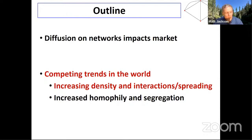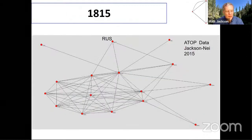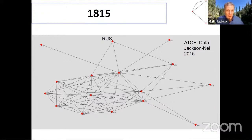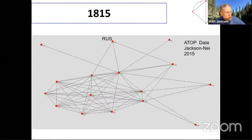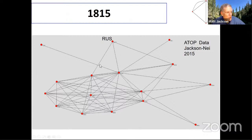Let me show you pictures of networks over time. This is from a study I did with Stephen Nye about five years ago. It's very hard to find networks that go back a long time, so nodes are countries and there's a link between two countries if they had a treaty with each other. This starts right after the Napoleonic Wars in 1815, and I'm going to take you through decade by decade to see how this network evolved.